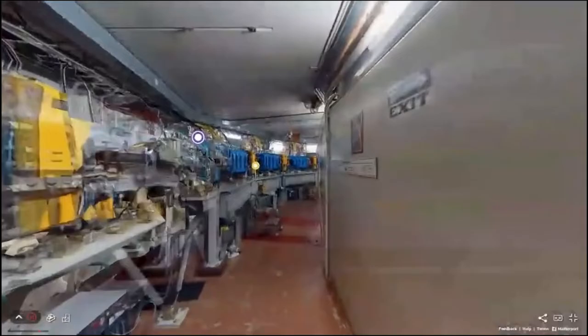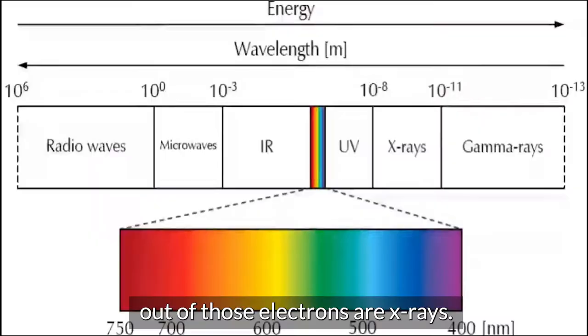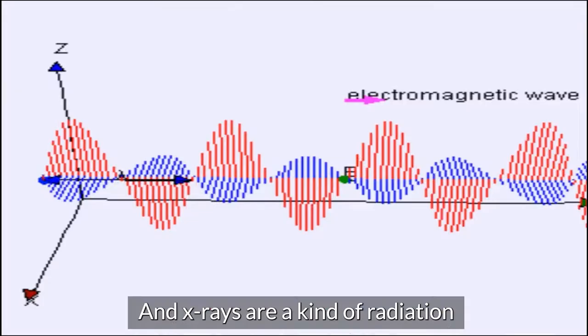In the case of the ALS, the interesting radiation that we want to get out of those electrons are x-rays, and x-rays are a kind of radiation that have a short wavelength.